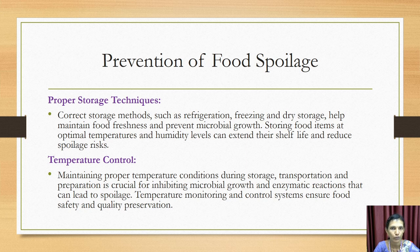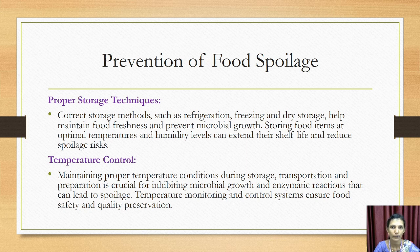To prevent food spoilage, everything must be maintained properly. Correct storage methods such as refrigeration, freezing, or dry storage can maintain food freshness and prevent microbial growth. Storing food at optimal temperature and humidity levels can extend the shelf life of food and prevent spoilage.